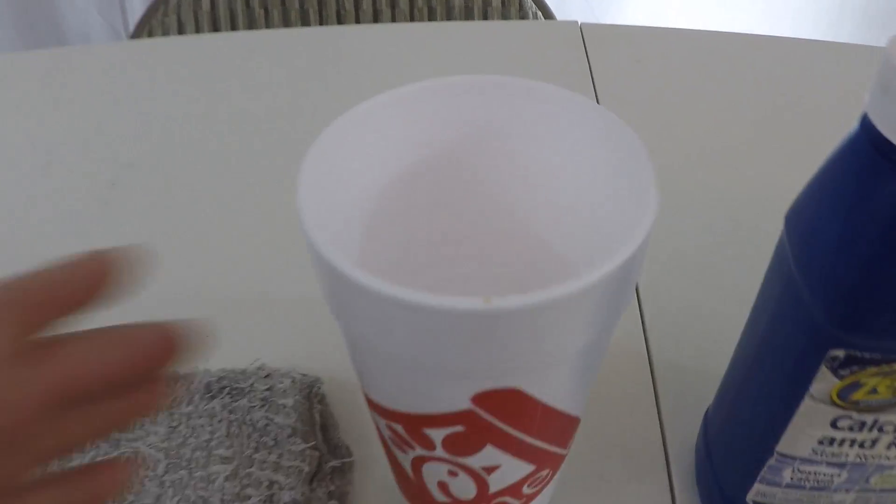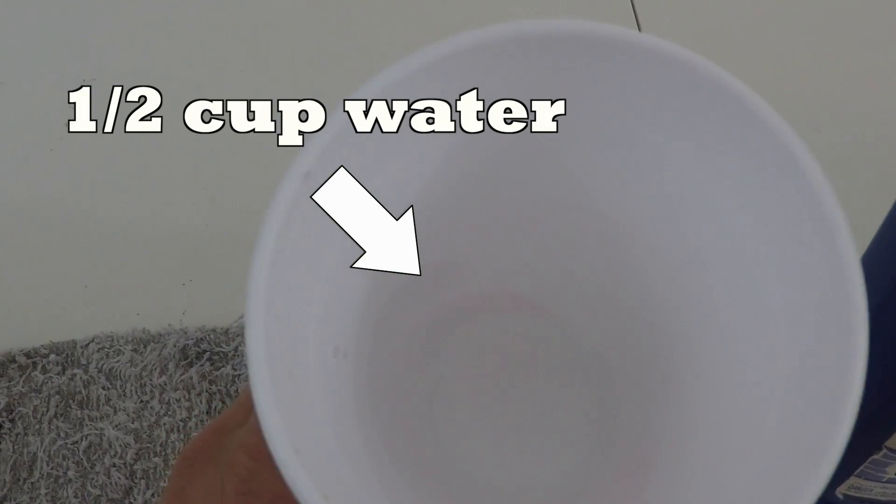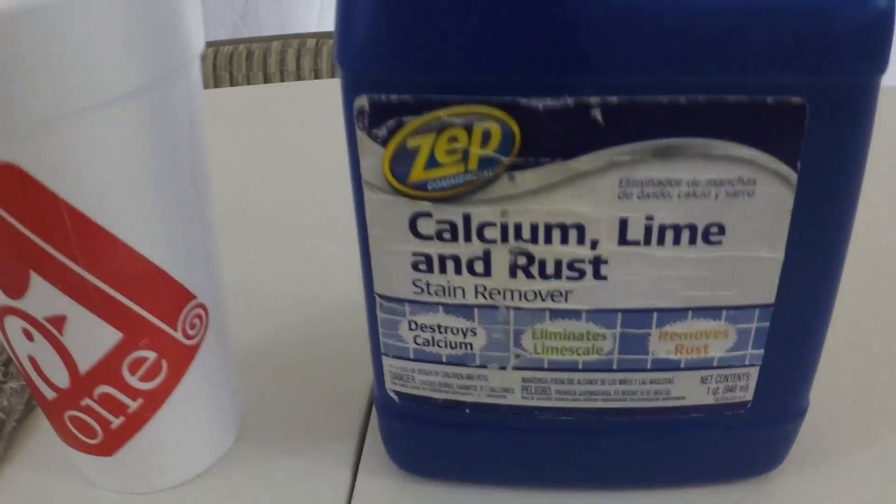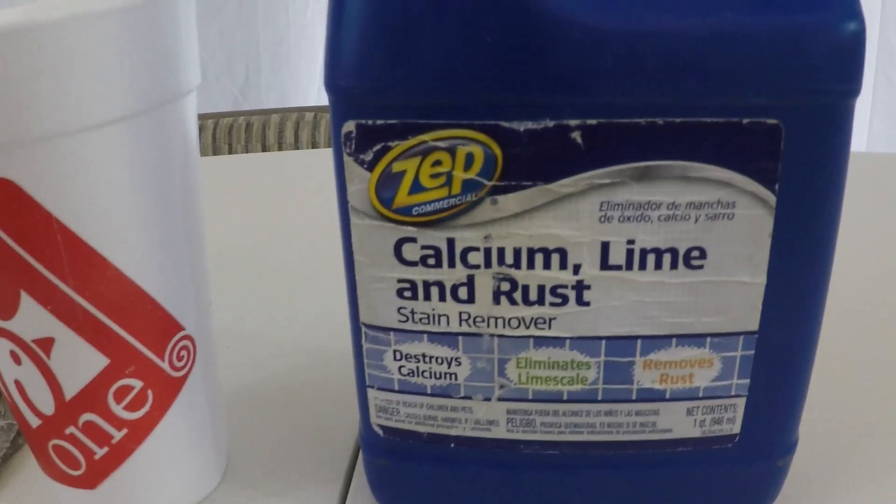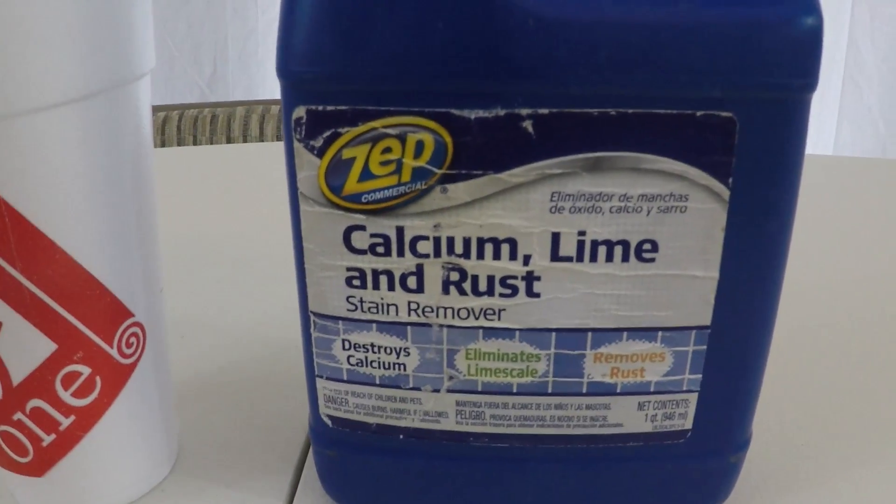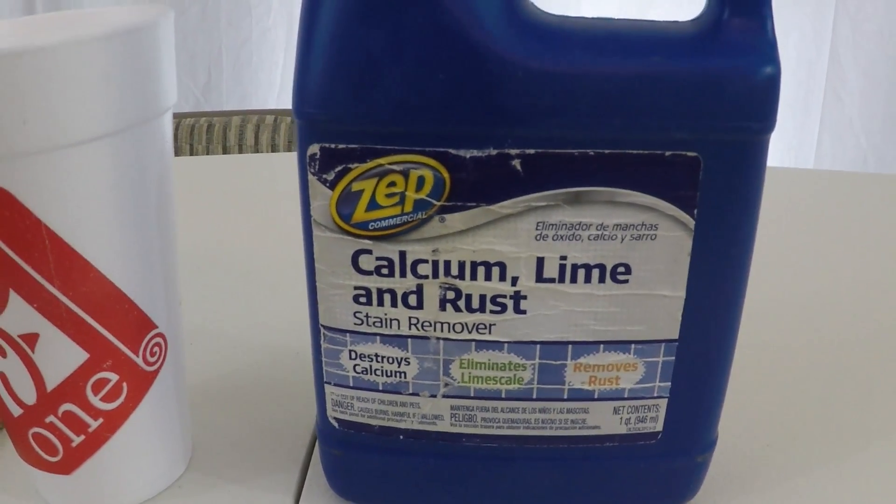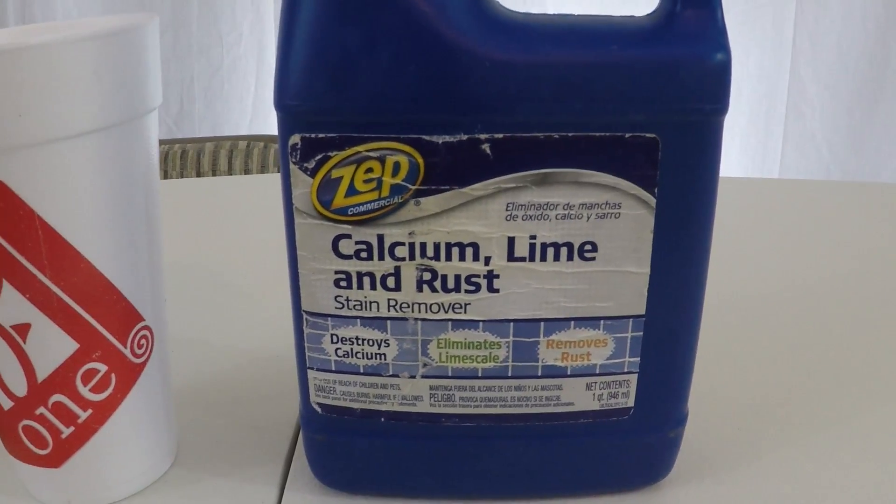So get an old cup like this and put a little bit of water in the bottom. Then you're going to take some of this. This is Zep Commercial Calcium Lime Rust Stain Remover. You can find this at any hardware store. It is liquid sorcery in a bottle.